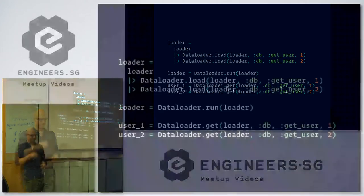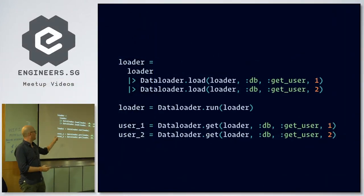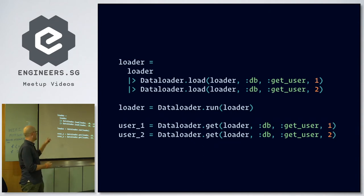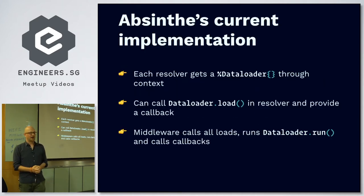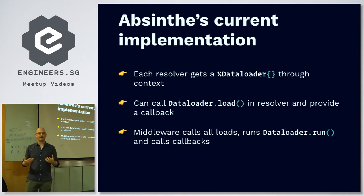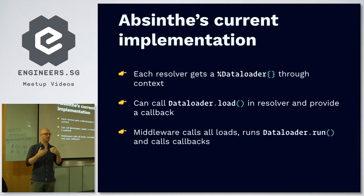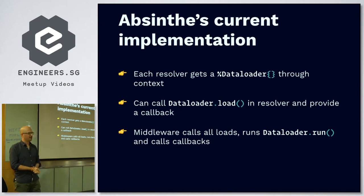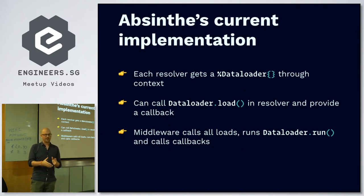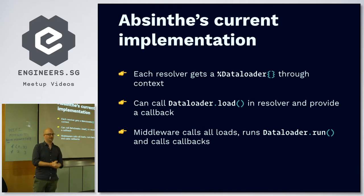This is how it works in code. You basically get the loader, you load — here I load user one and user two — then I explicitly run the loader, and then I get it back from the results, which is a data structure containing the results. So each resolver — resolvers are kind of like controllers if you're familiar with MVC — the resolver's job is to fetch, for instance, a user. Those resolvers get a data loader. In a resolver, you load the data and supply a callback, and then the middleware combines all of that together, runs the data loader one time, and all the callbacks are run after that.